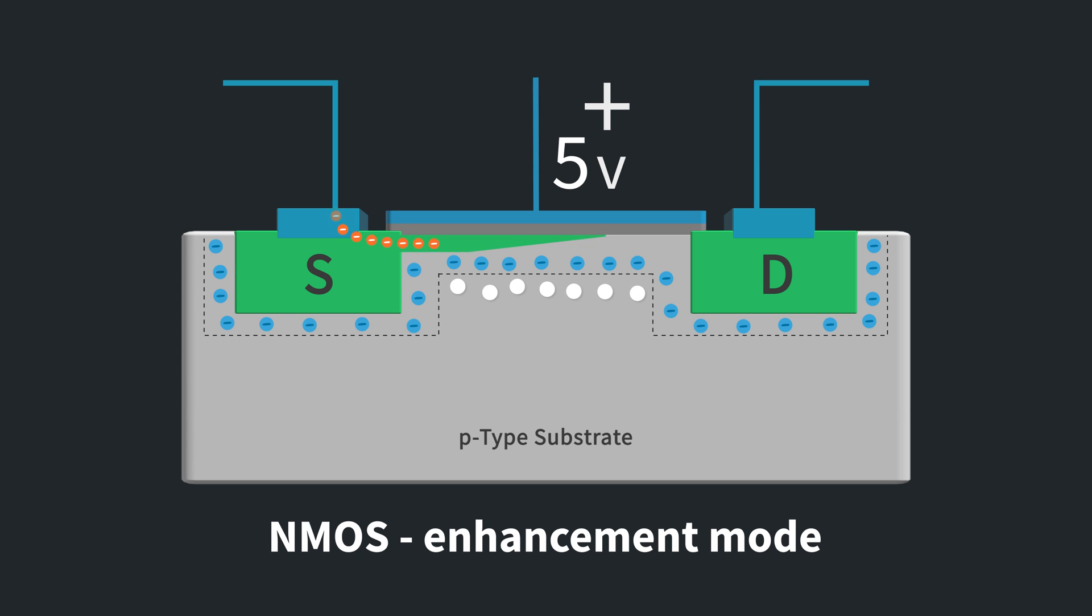Finally, as the gate voltage gets higher than the threshold voltage, electrons from the source and drain flow in and form an inversion layer of electrons that connect the source and drain regions. Now, if you put a voltage across the drain and source, you'll get a current that is linearly related to the voltage. As you increase the drain source voltage, the current will go up. If you decrease the voltage, the current will go down.